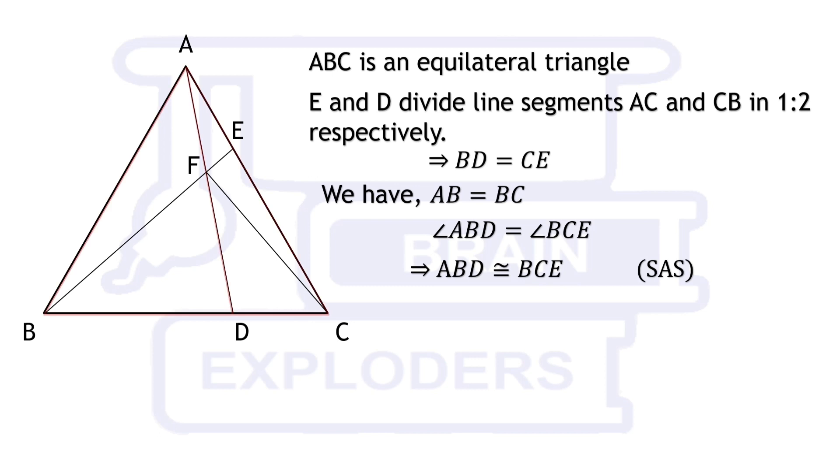Now if we take triangle ABC along with the line segment AD and rotate it by 120 degrees, we will find that AD finally comes on the position of BE.